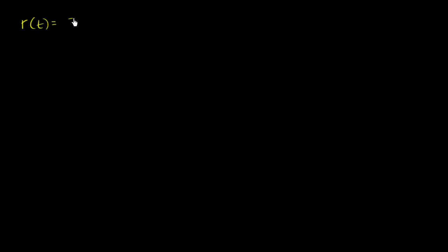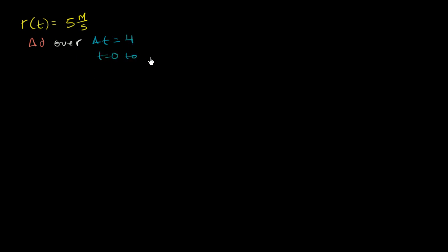Let's say that something is traveling at a constant rate of five meters per second — that's its velocity in one dimension. If it was negative, it would be moving to the left; if it's positive, it's moving to the right. And let's say that we care about our change in distance over a change in time of four seconds, from t equals zero to t equals four. That's our four-second interval that we care about.